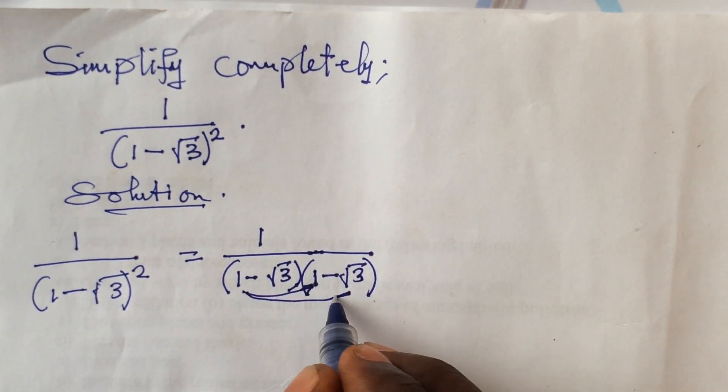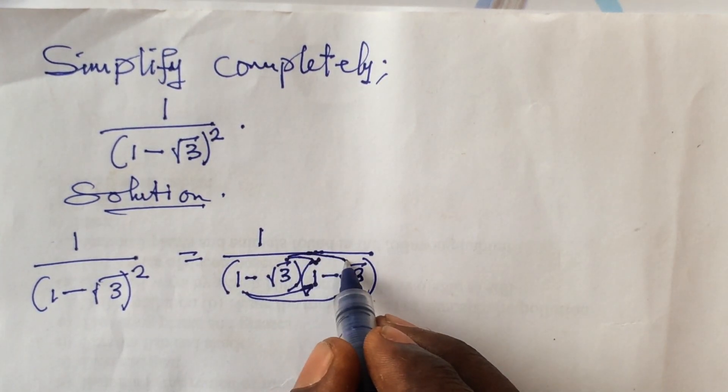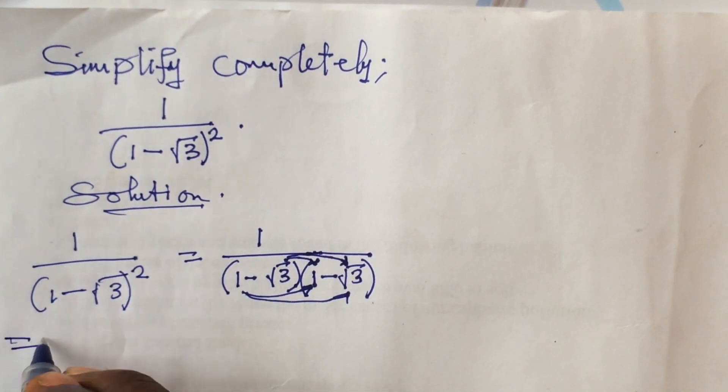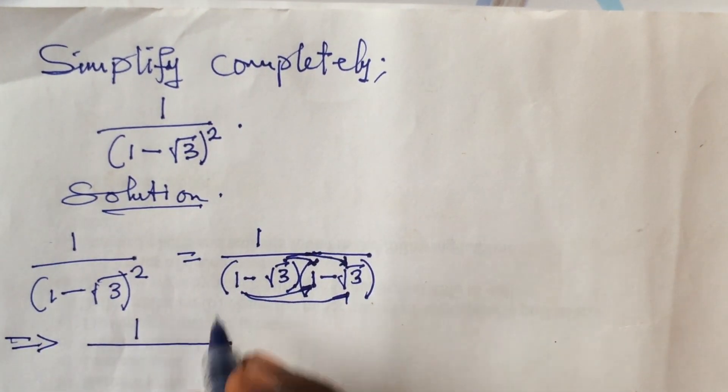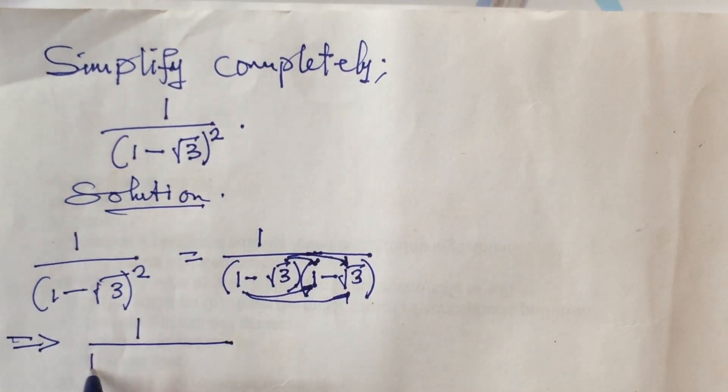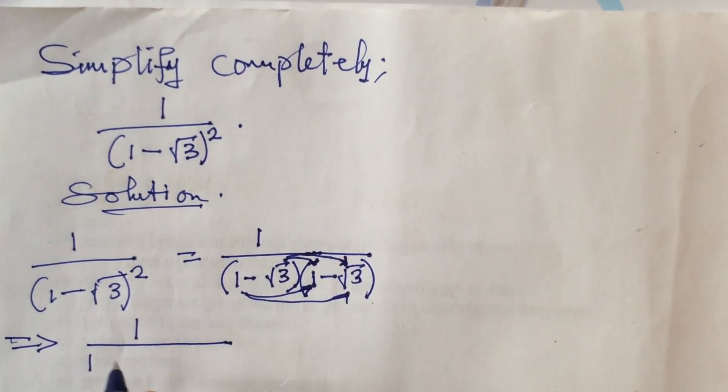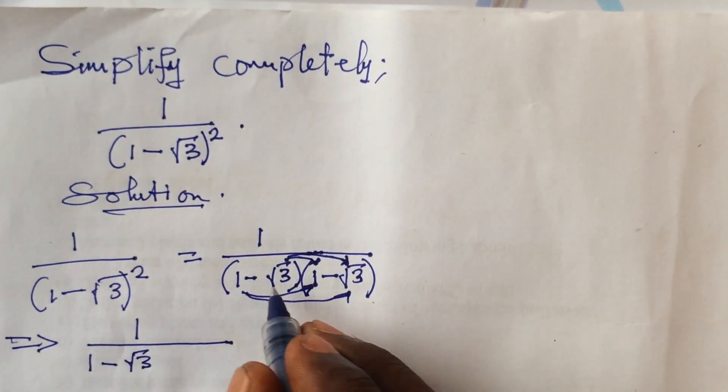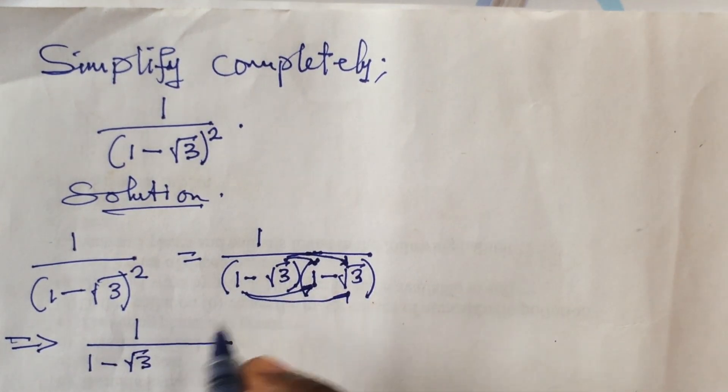With this we have 1 over: 1 times 1 gives us 1, then 1 times minus root 3 gives us minus root 3. Root 3 times 1 gives us minus root 3, then minus root 3 times minus root 3 gives us plus root 9.